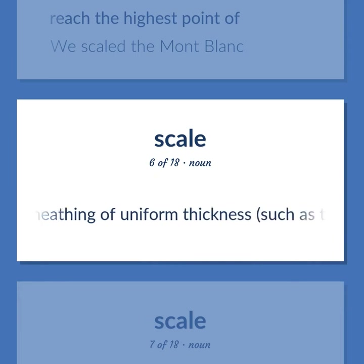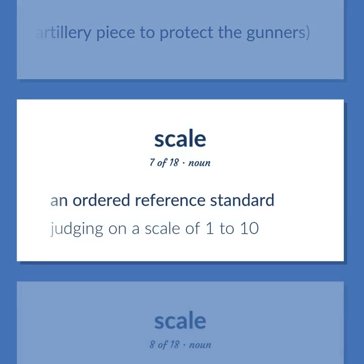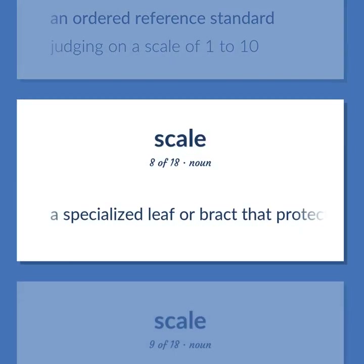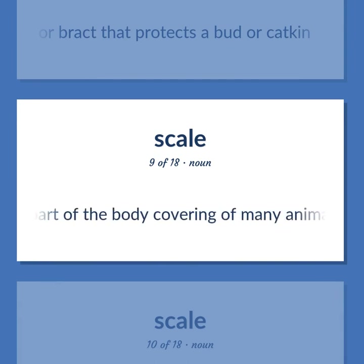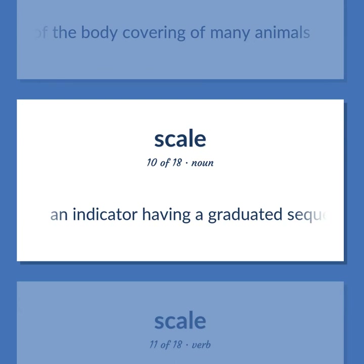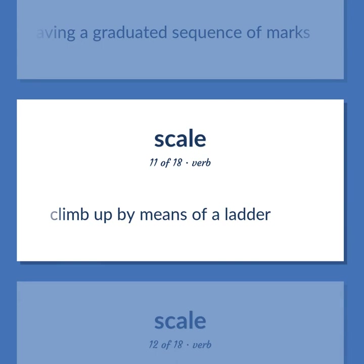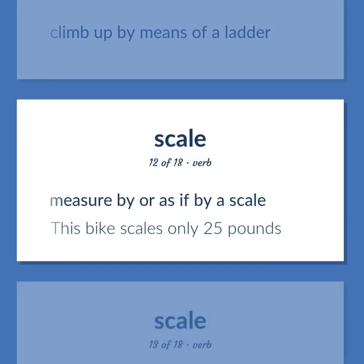Scale: A metal sheathing of uniform thickness, such as the shield attached to an artillery piece to protect the gunners. An ordered reference standard — judging on a scale of 1 to 10. A specialized leaf or bract that protects a bud or catkin. A flattened rigid plate forming part of the body covering of many animals. An indicator having a graduated sequence of marks. Climb up by means of a ladder. Measure by or as if by a scale — this bike scales only 25 pounds.